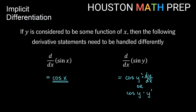So the idea is: here with sine x, this is just x, a function of x, so we take the derivative normally. But here we have y inside, which is additionally a function of x. So inside of the sine operation, we need to use the chain rule and multiply by the derivative of what's inside, which is either dy/dx or y prime.